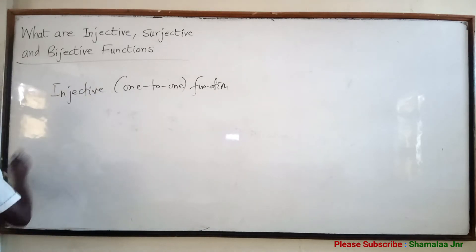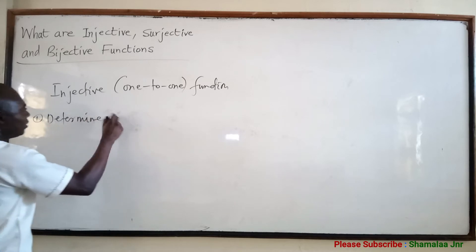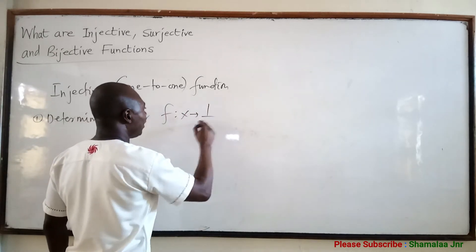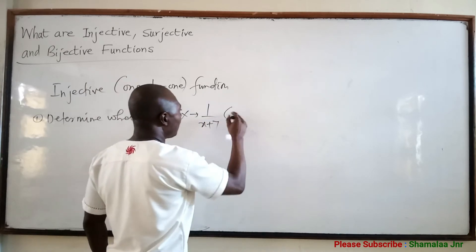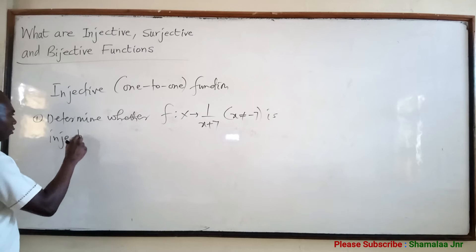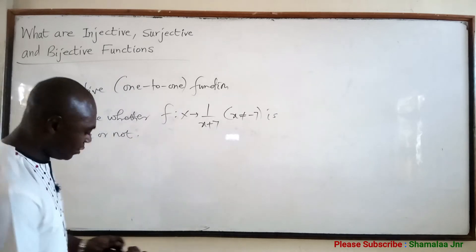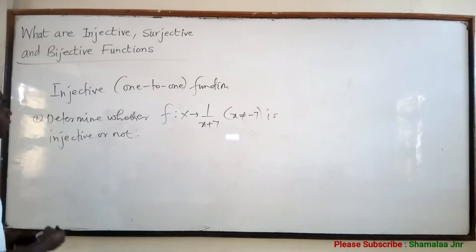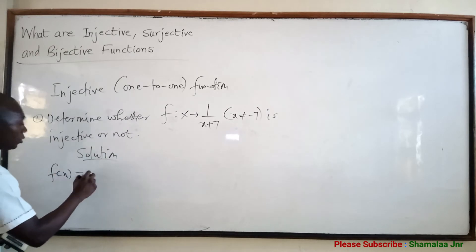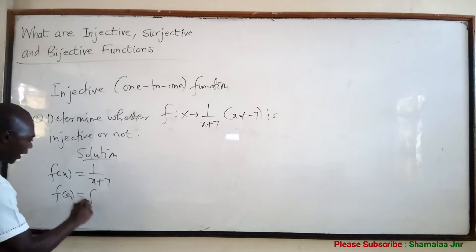Let's look at an example. Determine whether F, where X maps to 1/(x+7) for x ≠ −7, is injective or not. Is it one-to-one or not? Solution: F(x) = 1/(x+7). This means we set F(A) = F(B).